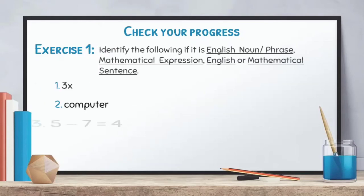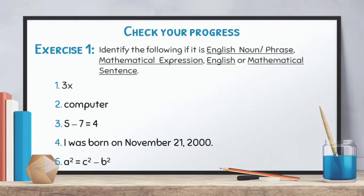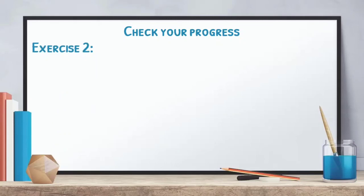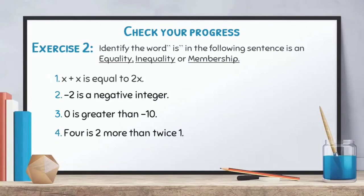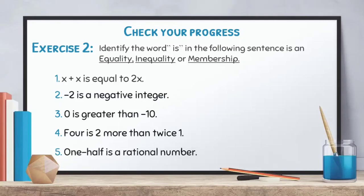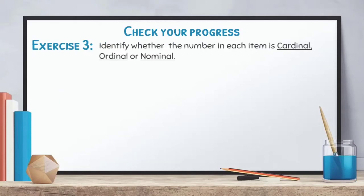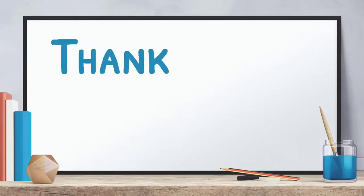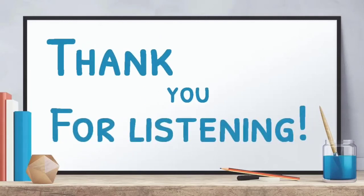We have here your 'Check Your Progress,' which will serve as your assignment. For exercise one, identify if each item is an English noun or phrase, a mathematical expression, an English sentence, or a mathematical sentence. For exercise two, identify if the word 'is' in each sentence is used as equality, inequality, or membership. For exercise three, identify whether the number in each item is cardinal, ordinal, or nominal. They are very easy — thank you so much for listening today. I will see you back next time. Keep safe always, goodbye everyone, God bless!